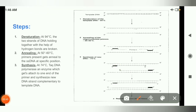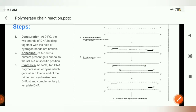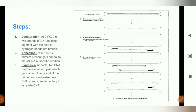Taq DNA polymerase gets attached at one end of the primer and then starts synthesizing a complementary DNA strand to the template strand. In this way we get numerous copies of the given DNA, and without the help of cells we can perform cloning.